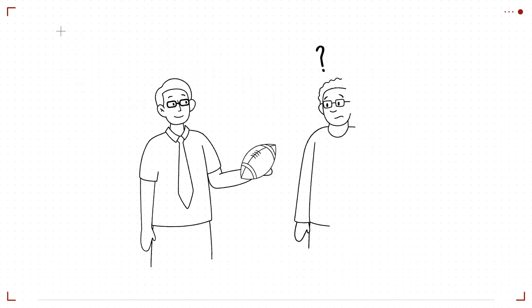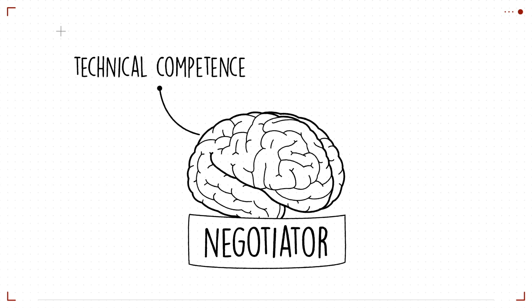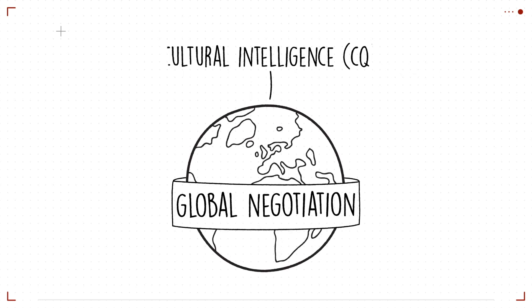In today's global interdependent world, we are bound to be negotiating across cultural boundaries. But people often assume that what works in their own culture works everywhere. They mistakenly think that it's technical competence and general intelligence that are needed to be an effective negotiator. But in a global negotiation, it's cultural intelligence that's key to mastering the deal.